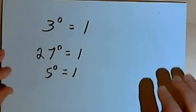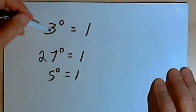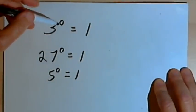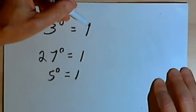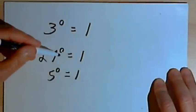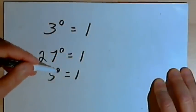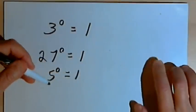So in your math class or in your textbook, you've probably been told that raising a number to the zero power is going to make it equal to 1. So 3 to the zero would equal 1, 27 to the zero equals 1, 5 to the zero equals 1, and so on.